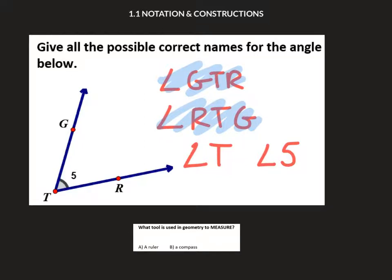What you couldn't say—you couldn't say angle GRT, for instance, because that would mean R is the vertex, and R is not our vertex. T is the vertex. Notice where it's positioned each time.